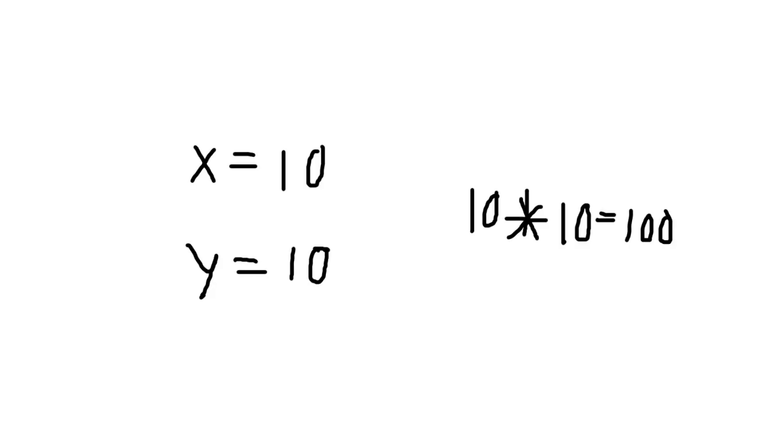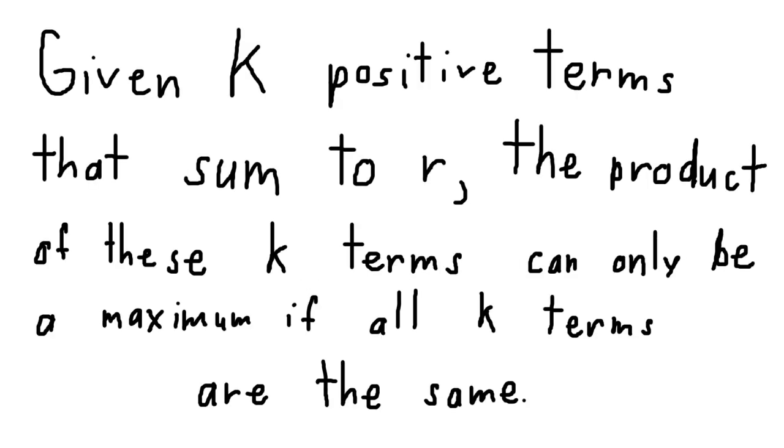Anyways, we see that the result is 10 and 10, which are as close together as possible. I don't exactly have a formal proof to show you for this, but given a fixed sum of some number of terms, the maximum product is achieved when all the parts of the sum are as close together as possible.